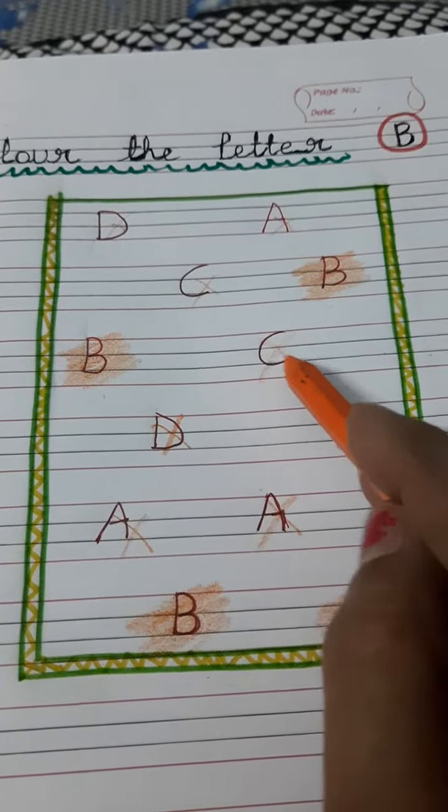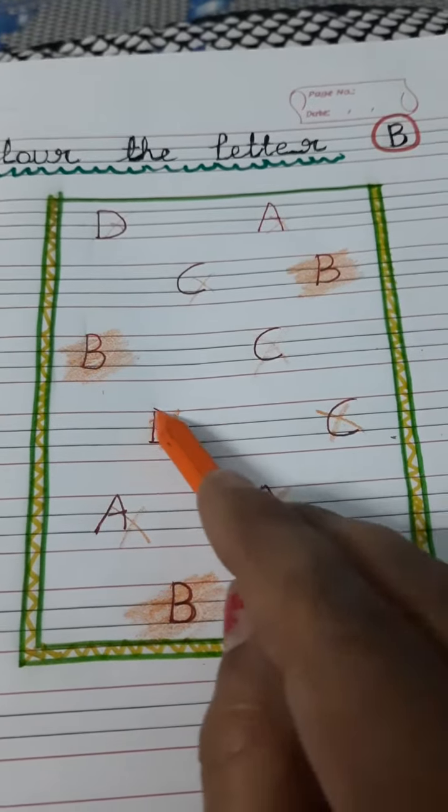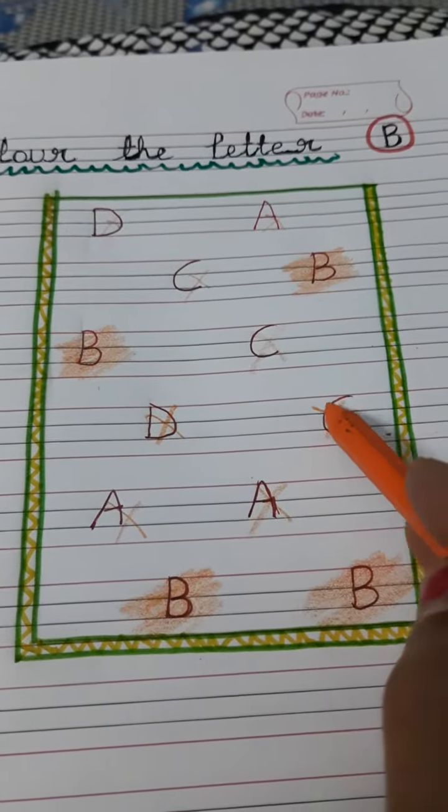Capital B. Capital C, we don't color this letter. Capital D, cross this letter. C, cross this letter.